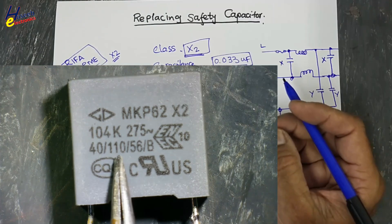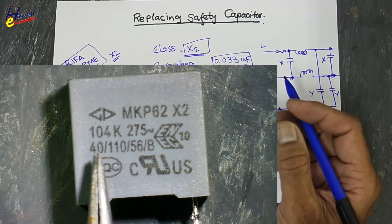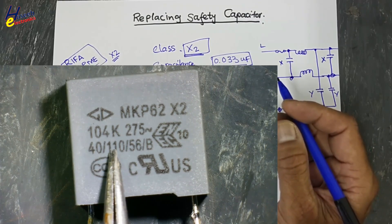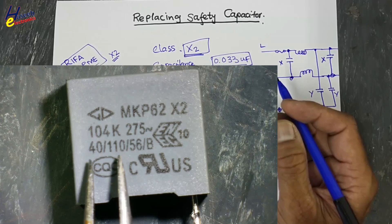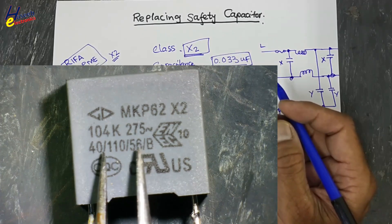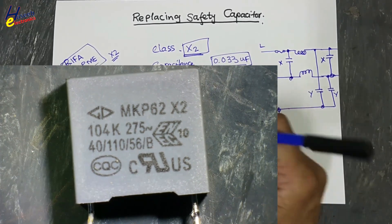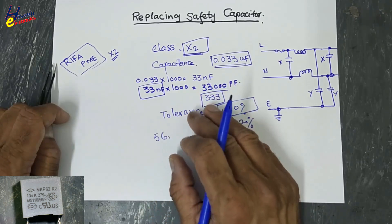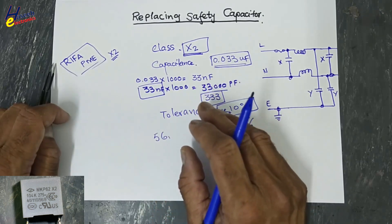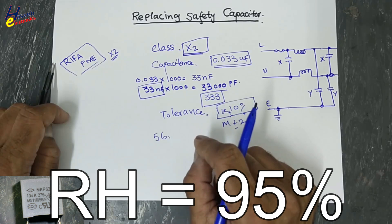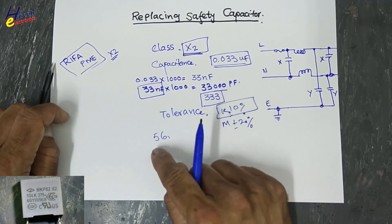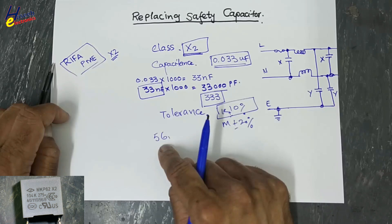Then climate category and passive flammability class. Climate category: minus 40 degree Celsius to 110 degree Celsius. It is working temperature, so we will select the same code. And 56 number of days. If this capacitor is operated at 40 degree temperature, 95% relative humidity, this capacitor can withstand for 56 days with that damp heat condition, high humidity and 40 degree Celsius working temperature.